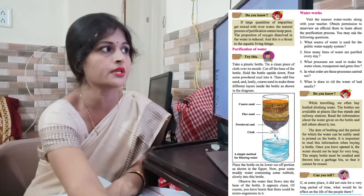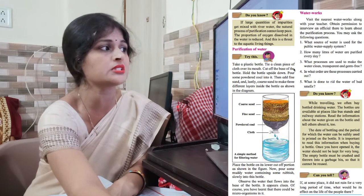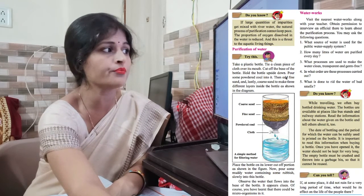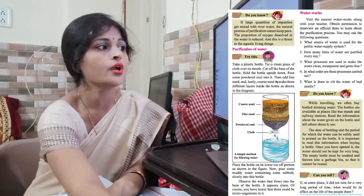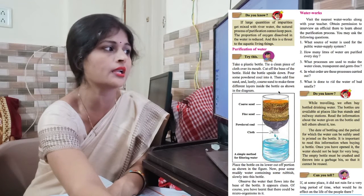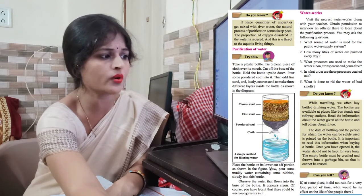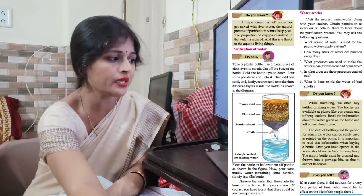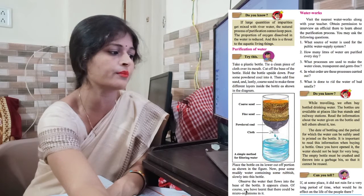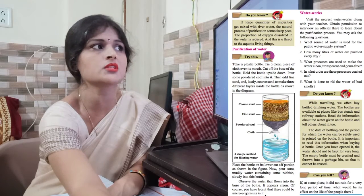For the treatment of water, try this: take a plastic bottle, tie a clean piece of cloth over its mouth, cut off the base of the bottle, hold it upside down, pour some powdered coal into it, then add fine sand and lastly coarse sand to make three different layers inside the bottle as shown in the diagram. Place the bottle on its lower cut portion, then pour some muddy water containing some rubbish slowly into it. Observe that the water flowing out at the base appears clean.